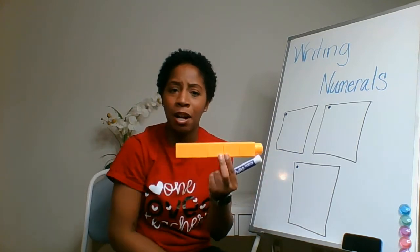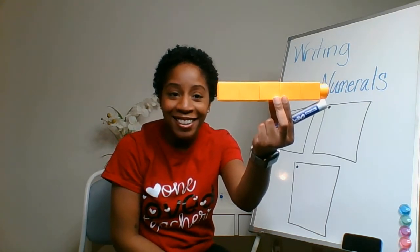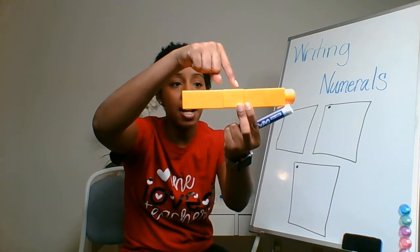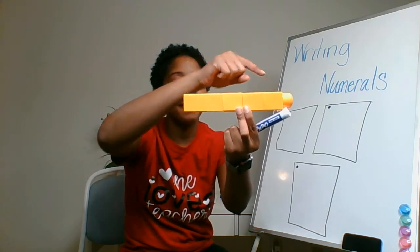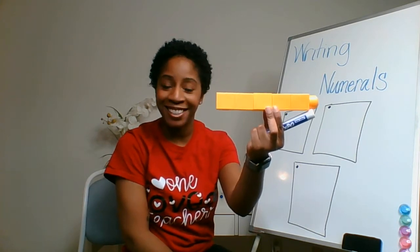Can you help me count the counters on the pretend train? Let's do it together. One, two, three, four, five. There are five yellow counters on our pretend train.